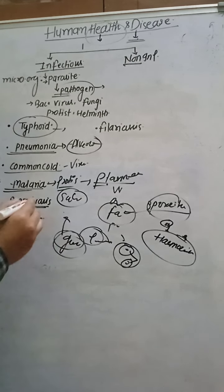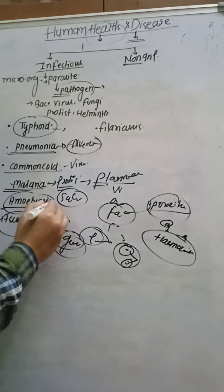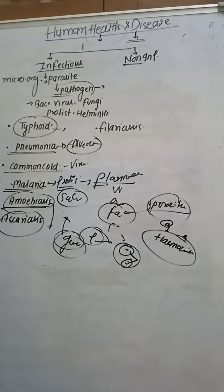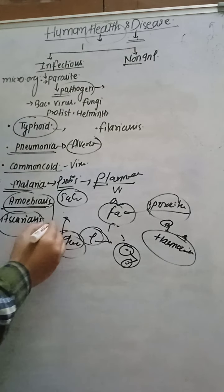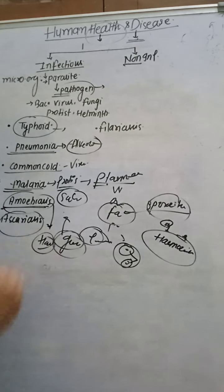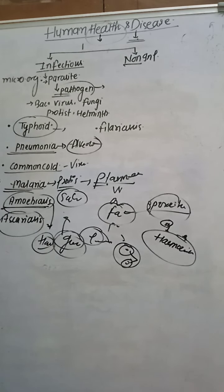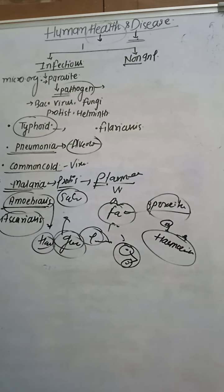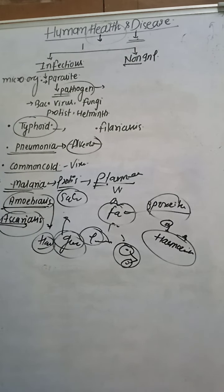Amoebiasis is caused by the protist Entamoeba histolytica. It is transmitted through the housefly, which is a mechanical carrier. The housefly contacts fecal matter, picks up the amoeba, and contaminates food and water. This infects the large intestine. Symptoms include constipation, pain, excess mucus, and blood in stool. Ascariasis is also transmitted through contaminated food, water, and objects via the housefly, causing internal bleeding.